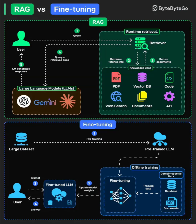Key differences: RAG versus fine-tuning. Here's the interesting part — you don't always have to choose. Many production systems use both. You can fine-tune a model on your domain to teach it your terminology and style, then layer RAG on top to handle dynamic, up-to-date information. This gives you the best of both worlds: domain expertise baked into the model with real-time knowledge augmentation.